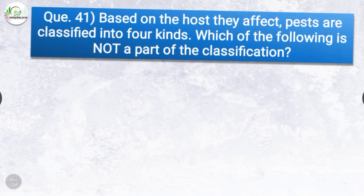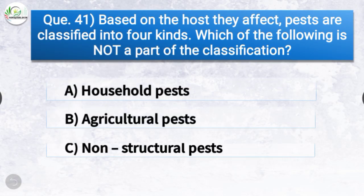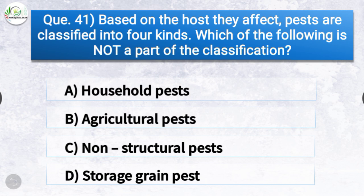Question number forty-one: Based on the host they affect, pests are classified into four kinds. Which of the following is not a part of the classification? The options are household pests, agricultural pests, non-structural pests, or storage grain pests. The correct answer is option C, non-structural pests — non-structural pests is not a part of this classification.